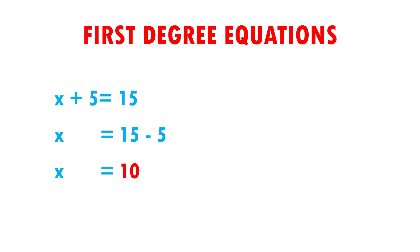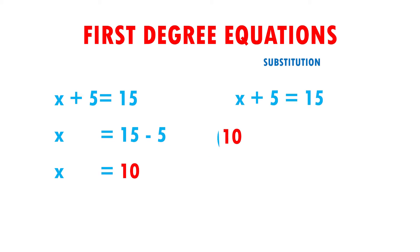To know if our result is correct, we must substitute — this means copying the equation exactly the same, but instead of putting the x, I put its value. I have x plus 5 equals 15, and substituting: 10 plus 5 equals 15. When adding 10 plus 5 gives me 15, and this is equal to 15. Therefore, our result is correct because both sides of the equation are exactly the same. Very easy, right?